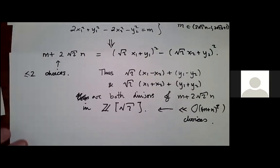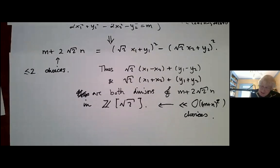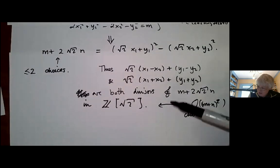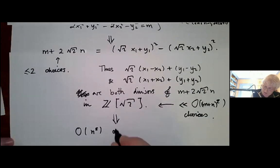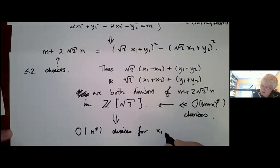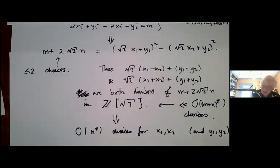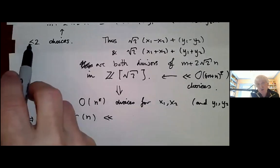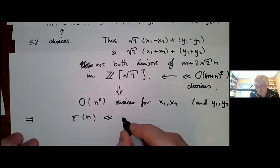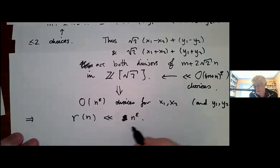So we've bounded the divisors. Given these divisors, we can recover x₁, x₂, y₁, y₂. This means there are O(n^ε) choices for x₁, x₂, and also y₁, y₂ because those are defined in terms of x₁ and x₂. So the number R(n) is bounded by at most two choices for m times this n^ε, giving R(n) ≪ n^ε, which is what I claimed. That's enough to prove Hua's lemma for this kind of example.